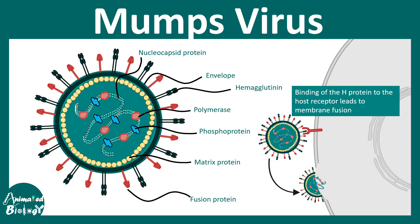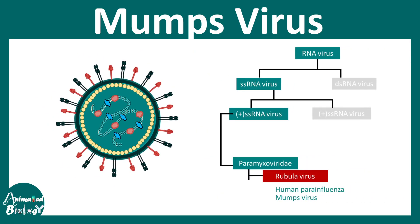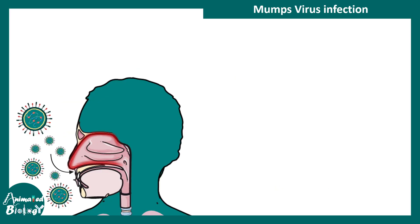Since this virus generally spreads via respiratory droplets, let's look at how the mechanism exactly operates. This virus belongs to the single-stranded RNA viruses — specifically the negative-sense RNA group. It belongs to the Paramyxoviridae family and is called Rubulavirus.